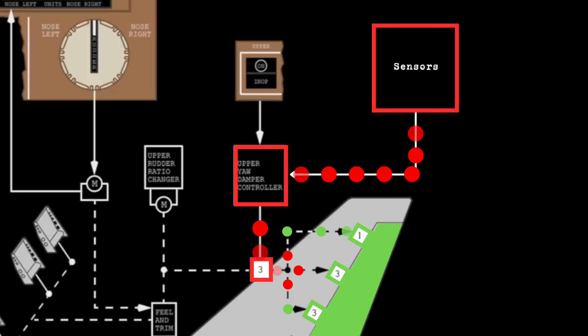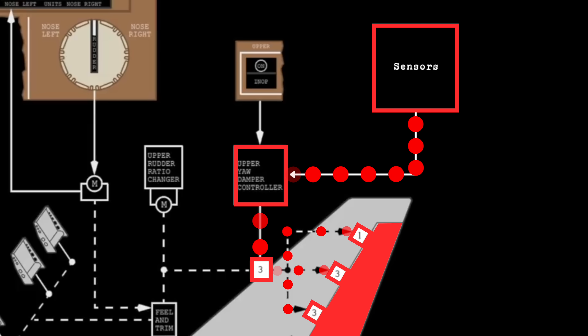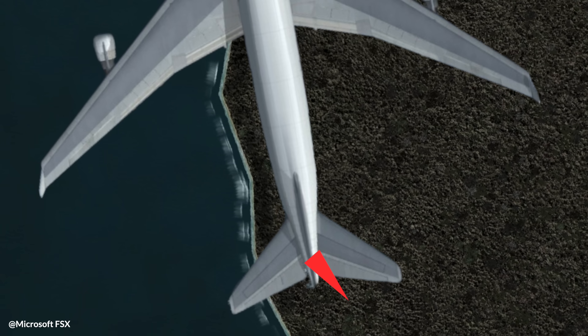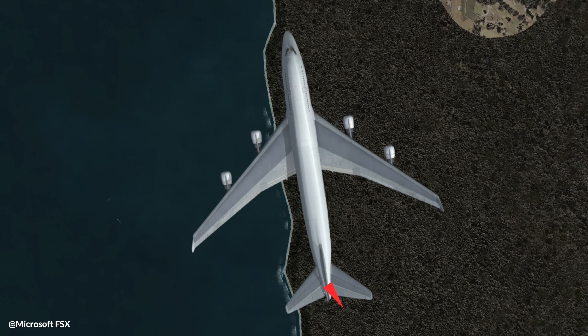The yaw damper processes the information and signals it to the respective actuators to bring the plane back on course, hence dampening the yaw moment.